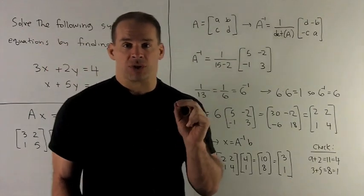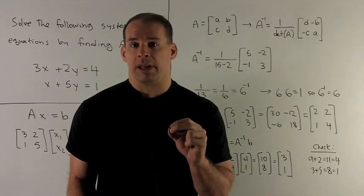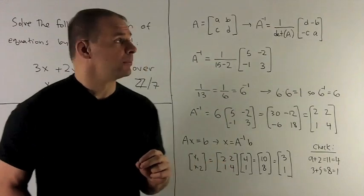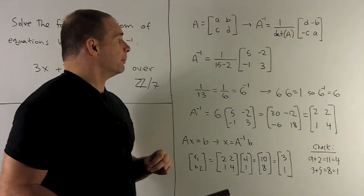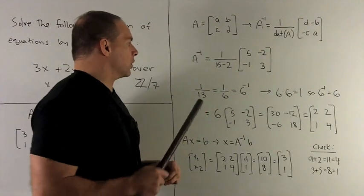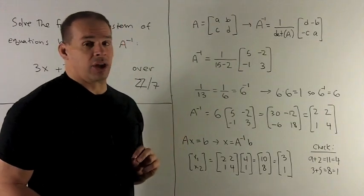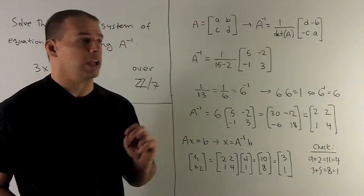So for the matrix that we're interested in here, we're going to have 1 over the determinant. That's going to be 1 over 15 minus 2. You multiply the diagonal, subtract off the product off the diagonal. So I'll have to deal with 1 over 13. And then we're just going to switch the entries, negate what's off the diagonal. So I'll have 5, minus 2, minus 1, 3.